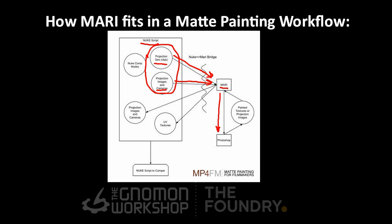Or you can use the unproject toolset that Mari has to send things quickly into Photoshop, and then send it back into Mari to bake down those textures or projection images. Once you've done your patches, you have two options for sending that back into Nuke: either sending a projection image and a camera, or sending a UV texture. Within Nuke, you can layer a new projection or a UV texture directly on top of your original projection setup.